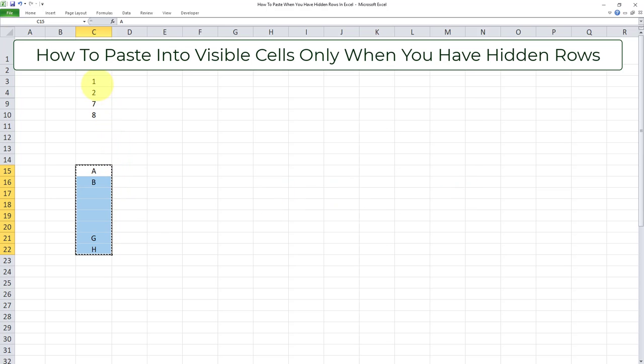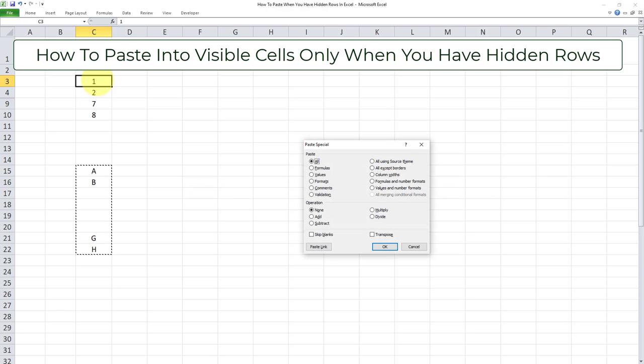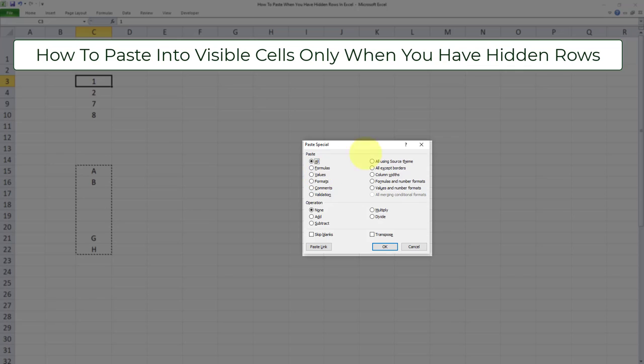And the final step is to select the range in which we want to paste data into. And I have to use the keyboard shortcut Ctrl-Alt-V in this scenario. So I'll do Ctrl-Alt-V on my keyboard. And this page over here appears, on which I will check skip blanks. And then I'll click OK.